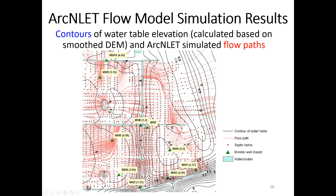This indicates that our flow model calibration is acceptable. This contour shows the water table elevation calculated based on smooth DEM and model calibration. The red lines represent flow paths, and it looks reasonable — water from septic tanks flows to the ditches and then to the canals.